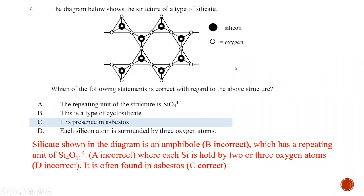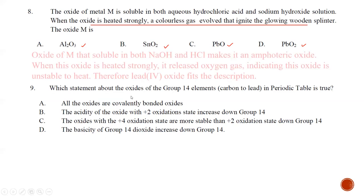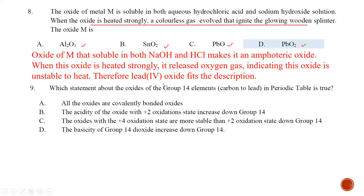Question number eight: the oxide of metal M is soluble in both hydrochloric acid and sodium hydroxide, meaning it is amphoteric. When the oxide is heated strongly, a colorless gas is evolved that relights a glowing wooden splinter. All the options are amphoteric, but the last statement says that when heated strongly a colorless gas is evolved that ignites — this means oxygen gas is released. The only oxide that can release oxygen is lead(IV) oxide, PbO2. The best answer is D.